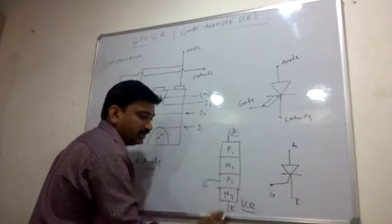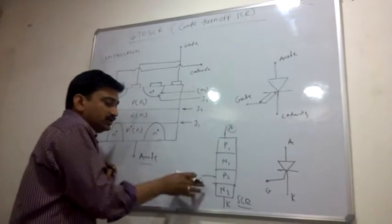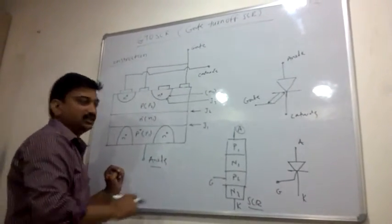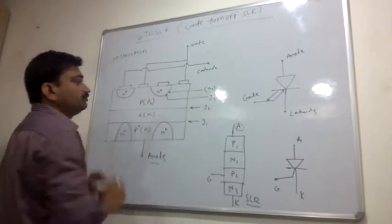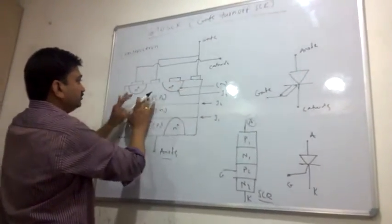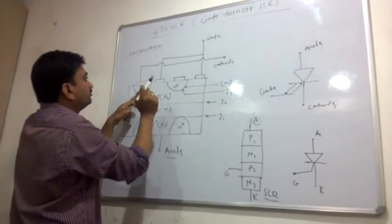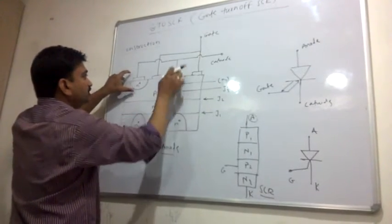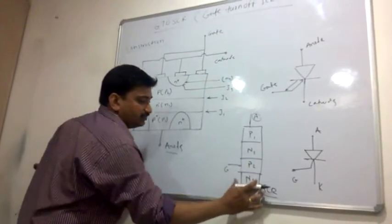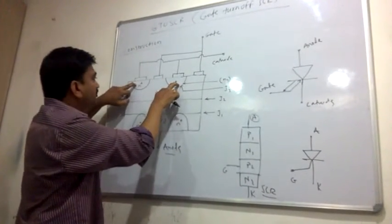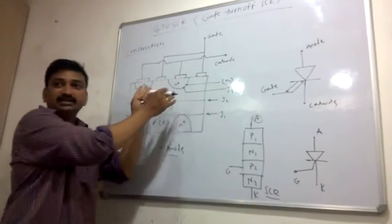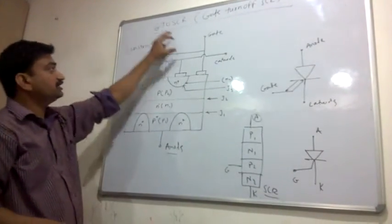So the gate area should be large. Look at the diagram — the gate terminal is connected to both terminals and the gate has a very large area. The cathode is embedded in small separate forms. The current is divided into two parts, and when it is divided it is easy to control. That is why in Gate Turn Off SCR, the cathodes are separated.